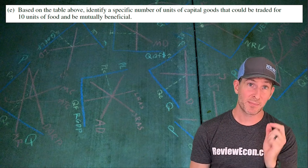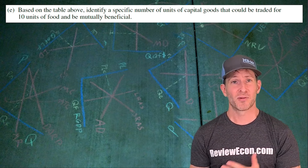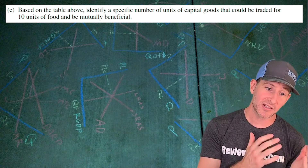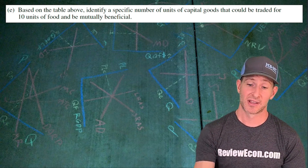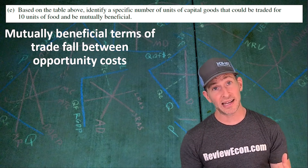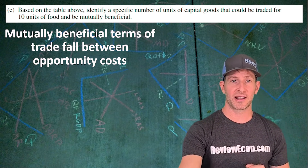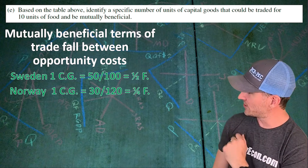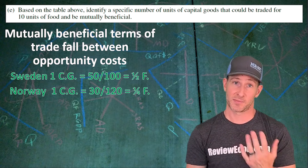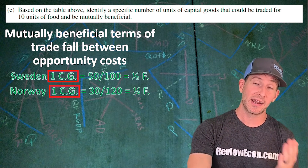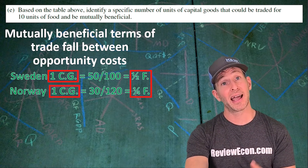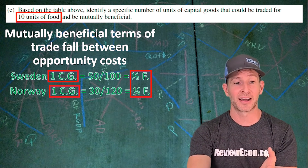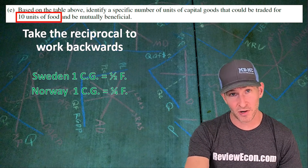For part E, we're going to find a mutually beneficial terms of trade for 10 units of food — meaning both Sweden and Norway would benefit from the trade. A mutually beneficial terms of trade will fall between the two countries' opportunity costs. Earlier we calculated that one capital good costs Sweden one half a unit of food, and Norway one fourth a unit of food. So one capital good for both countries should be worth between one quarter and one half a unit of food. But since we're looking at 10 units of food, we need to flip it around and take the reciprocal to find how many capital goods each unit of food is worth.